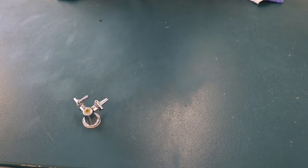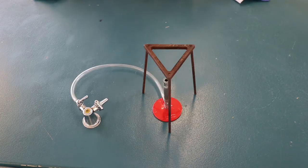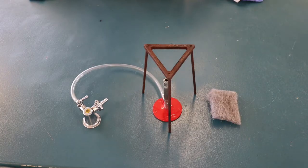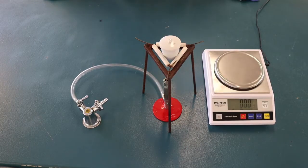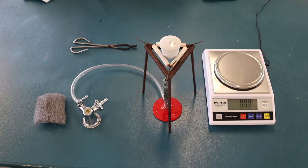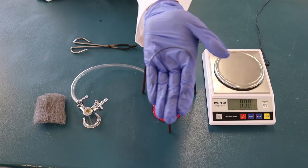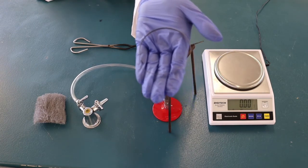These are the materials that you will need: a tripod, a Bunsen burner, steel wool, a pipe clay triangle, an electronic balance, a crucible and lid, crucible tongs, and a 20cm piece of magnesium ribbon.